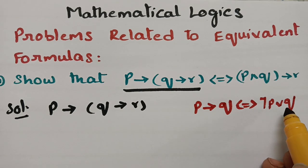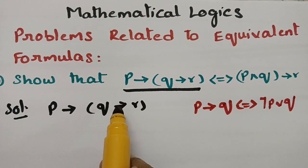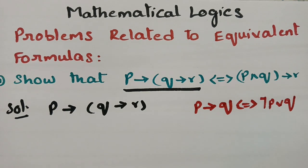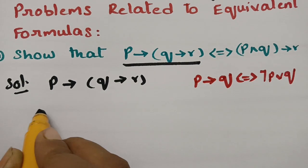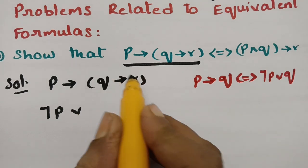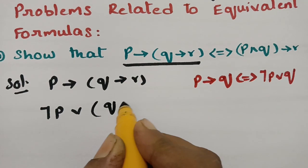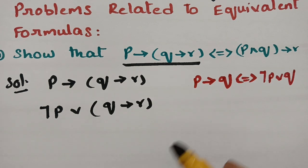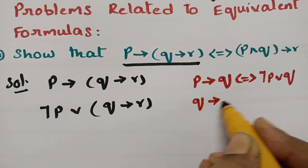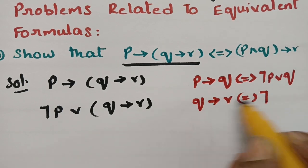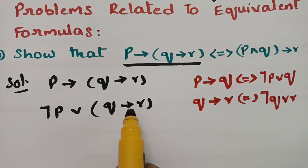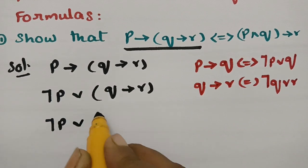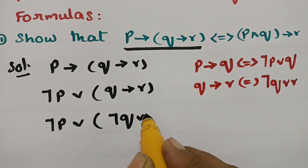Consider the inner part (Q implies R) as a single term. Since P implies Q is equivalent to negation P or Q, I bring this in terms of negation P or R, where the whole part (Q implies R) acts as Q. Again, we have an implication inside: Q implies R is equivalent to negation Q or R. So this value becomes negation P or (negation Q or R).